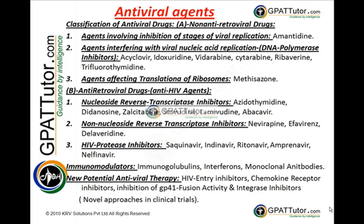DNA polymerase inhibitors include acyclovir, vidarabine, and cytarabine. Agents affecting ribosomal translation include methisazone. Antiretroviral agents include HIV protease inhibitors, non-nucleoside reverse transcriptase inhibitors, and nucleoside reverse transcriptase inhibitors. These drugs are mainly used in the treatment of HIV infection.